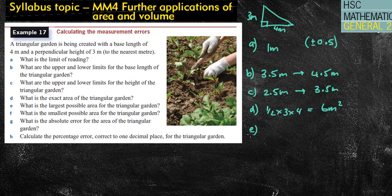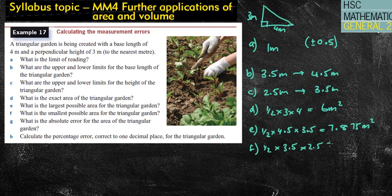E, what is the largest possible area? Well, that's going to be half times the 4.5 times the 3.5. So that's my biggest area, my maximum area, which is 7.875 meters squared. What is the minimum area? Well, I'm using the lower limits now. So half times 3.5 times 2.5, and that gives me 4.375 meters squared.